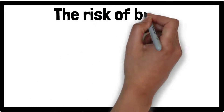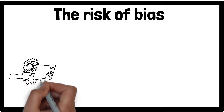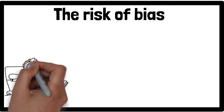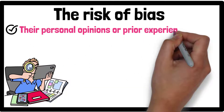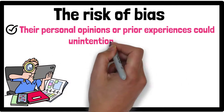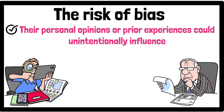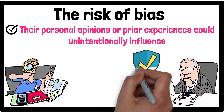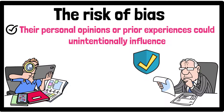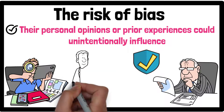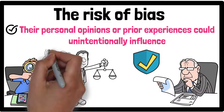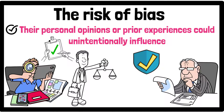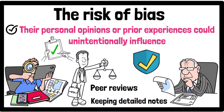Another challenge is the risk of bias since the researcher plays a significant role in interpreting the data. Their personal opinions or prior experiences could unintentionally influence how they see the data, impacting the objectivity of the results. To minimise this, researchers need to be highly aware of their biases and apply strategies to maintain objectivity, such as using peer reviews or keeping detailed notes.